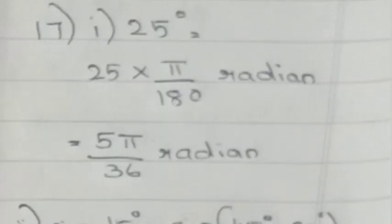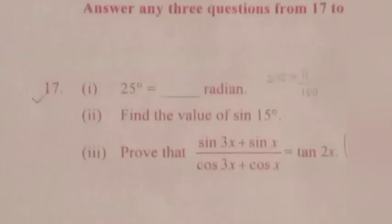Answer 1: 25° = 25 × π/180 = 5π/36 radians. 2. sin 15° = sin(45° − 30°) = sin 45° cos 30° − cos 45° sin 30° = (1/√2)(√3/2) − (1/√2)(1/2) = √3/(2√2) − 1/(2√2).